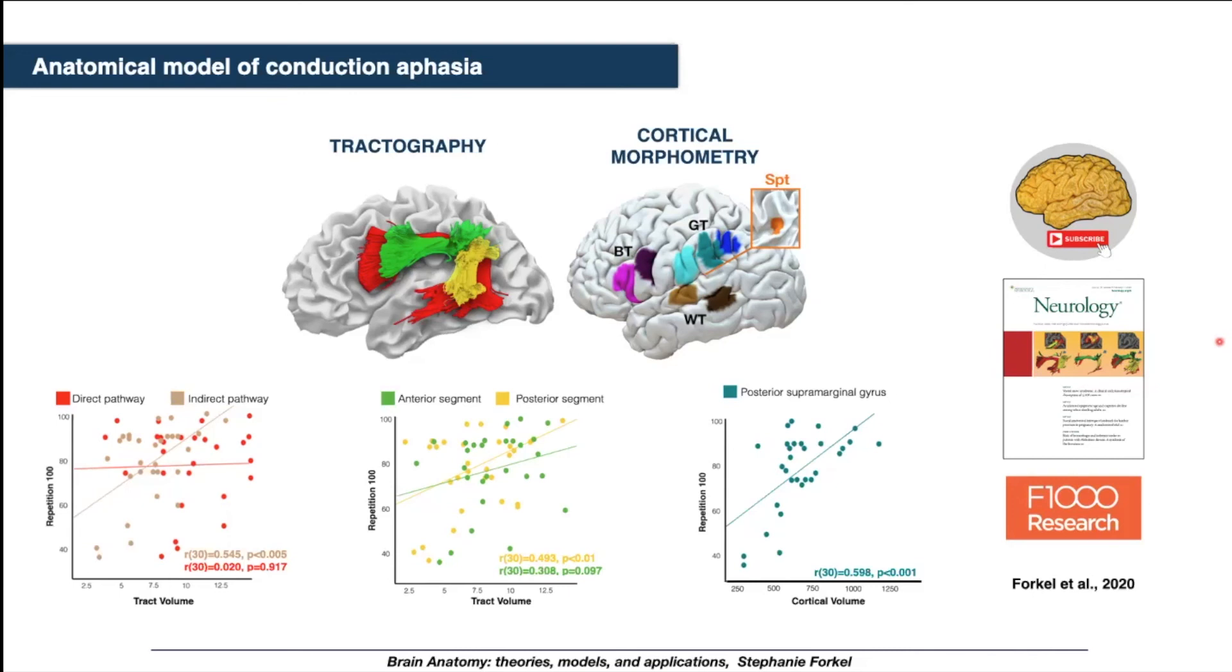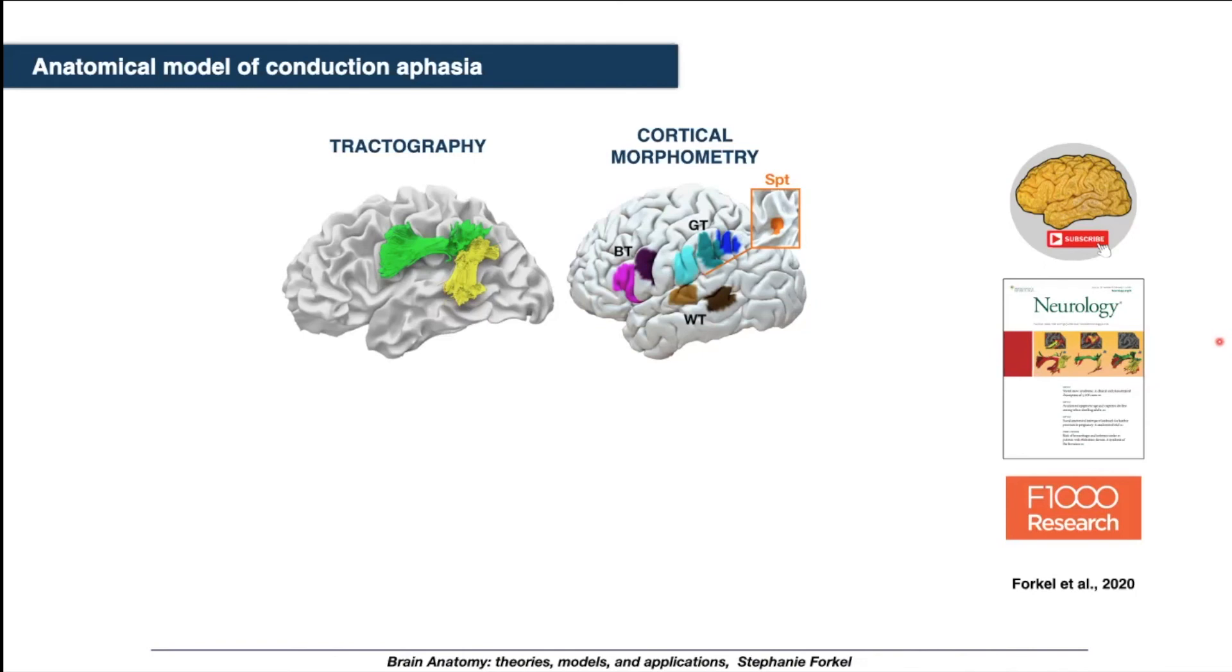In terms of the cortical areas, the only area that survived multiple comparison correction was the superior marginal gyrus. You remember that was at the end of the Sylvian fissure. So what we have to do now is to update our model of conduction aphasia in the brain, and it seems to be more the indirect pathway rather than the long pathway. This led us to propose a new model of conduction aphasia, 150 years after the original one, whereby the different flavors of repetition deficits can be explained by lesions that are along that network.